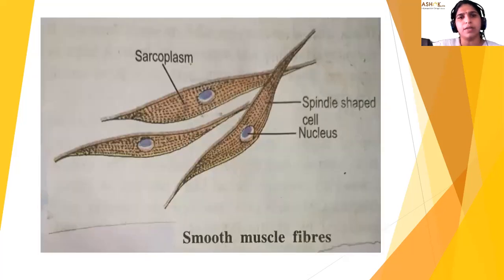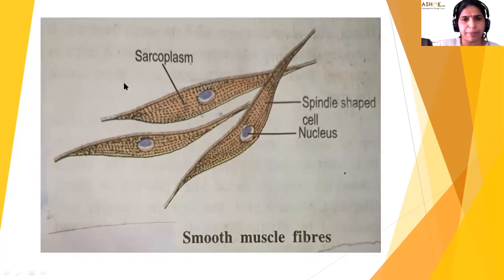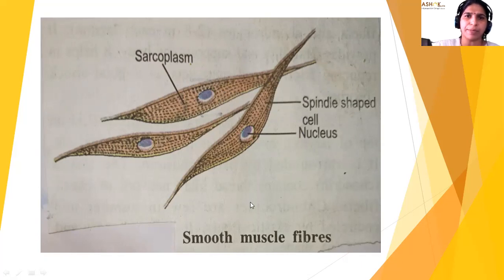Next is smooth muscle fiber. These are involuntary muscles that perform peristaltic movement in the stomach. They are fusiform cells tapering at both ends, with many myofibrils and the nucleus centrally located. Striations are not present in smooth muscle. They perform peristaltic movement of the digestive system and palpitation of the heart — actions we cannot control, known as involuntary actions.